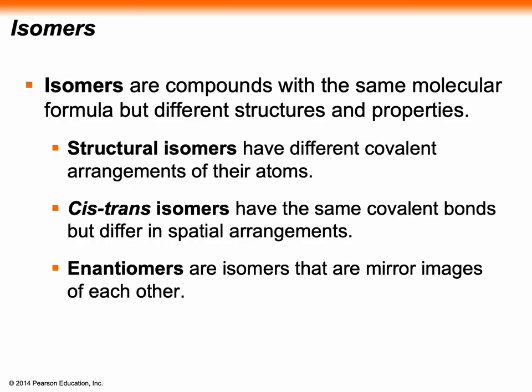Now, isomers. I think it's very important that you know what an isomer is and the results of two or more molecules being isomers of each other. You don't have to know the different kinds of isomers. But just for your information, there's a structural isomer, which has different covalent arrangements — in other words, the atoms are actually put together differently. They have the same atoms, but they're put together in a wholly different format.